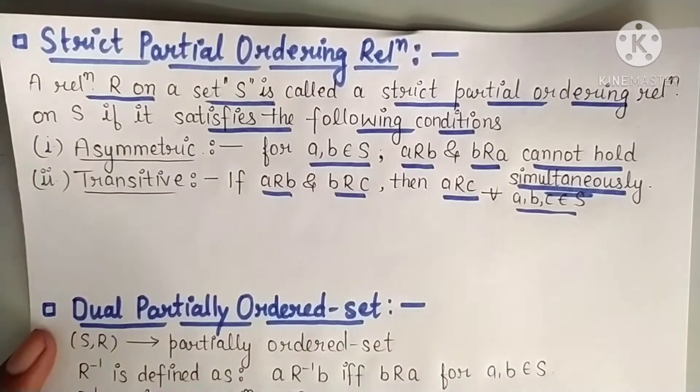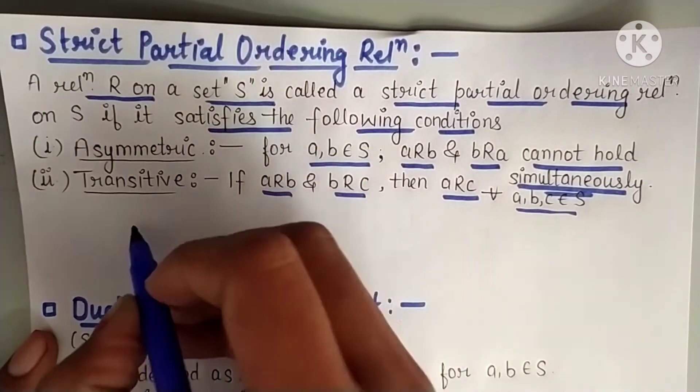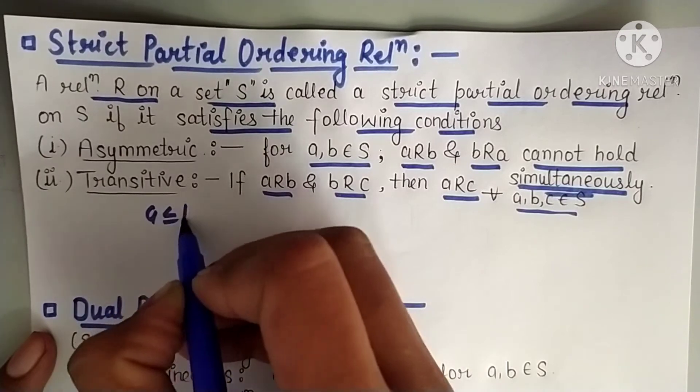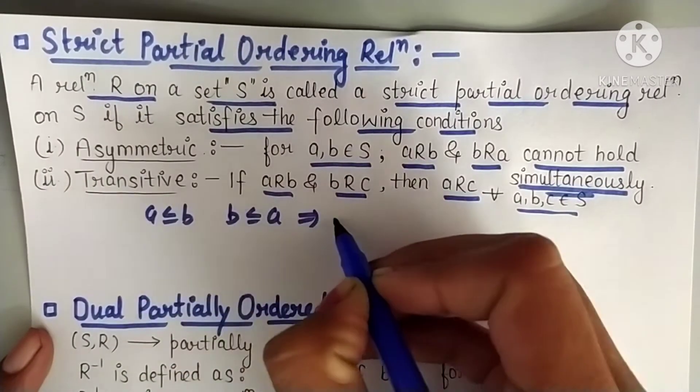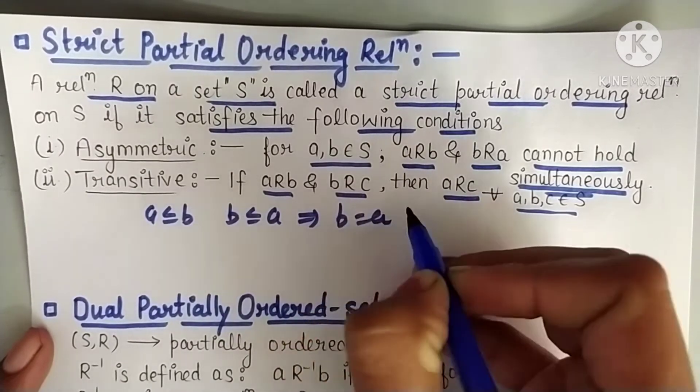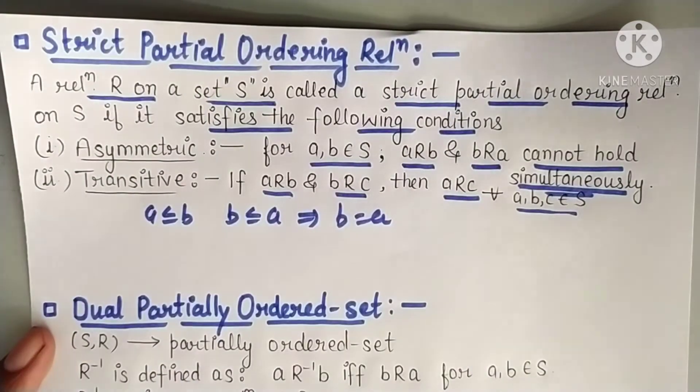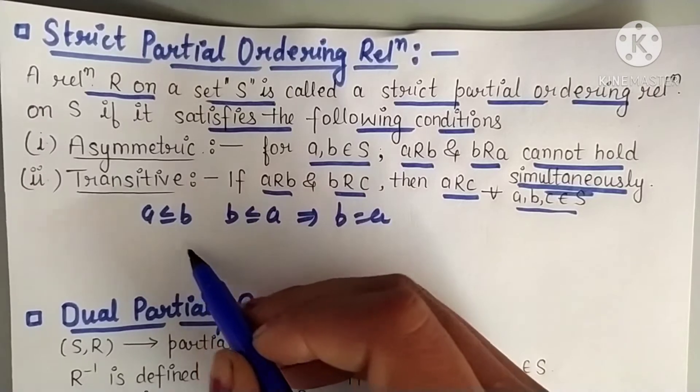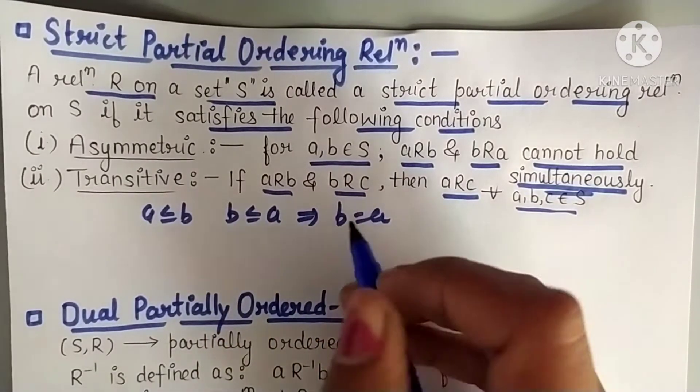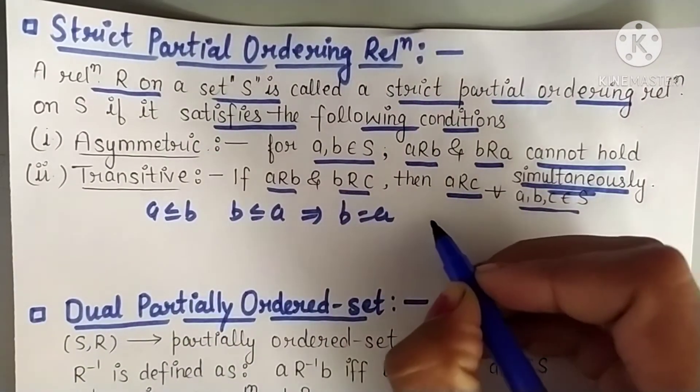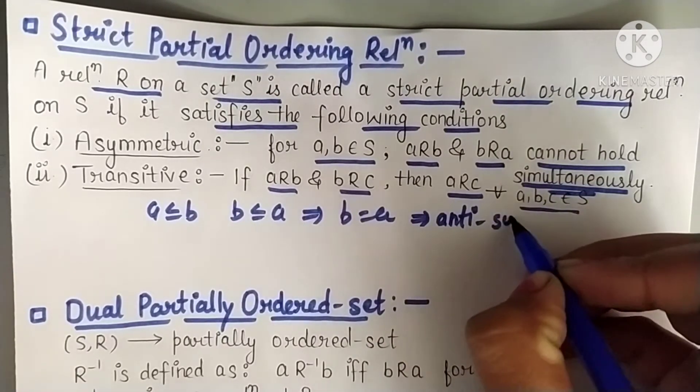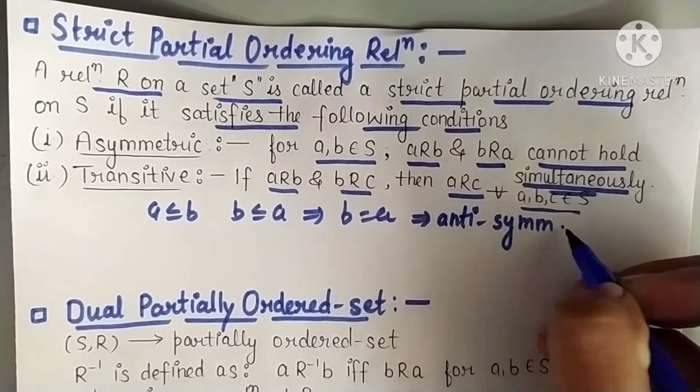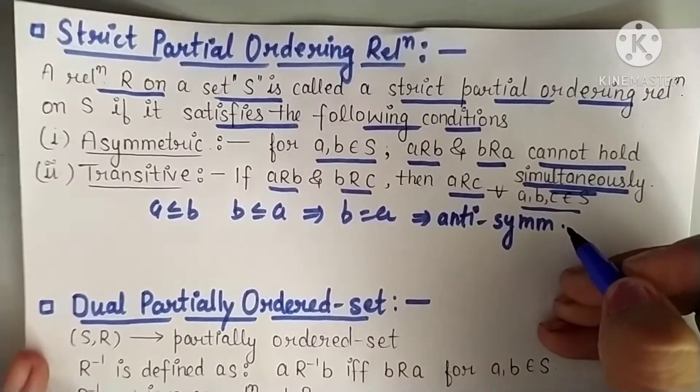Like we studied less than or equals to. We studied if a is less than equals to b and b is less than equals to a, this implies a equals to b. This happens in less than or equals to. So if a less than equals to b and b less than equals to a, then a equals to b. What is the meaning of this? This is anti-symmetric. We have read this before.